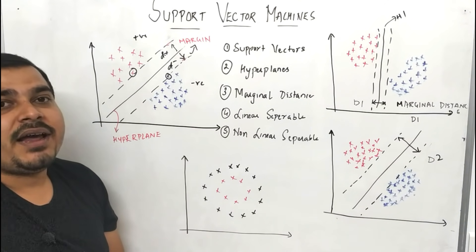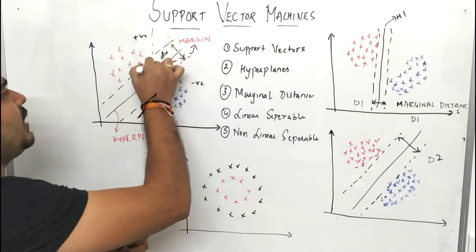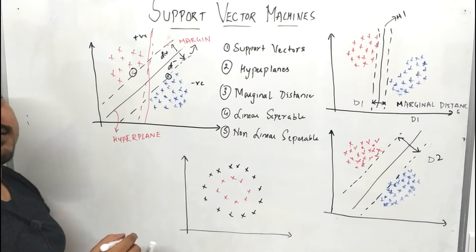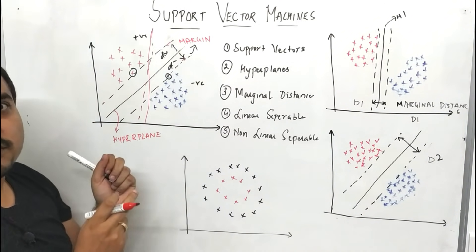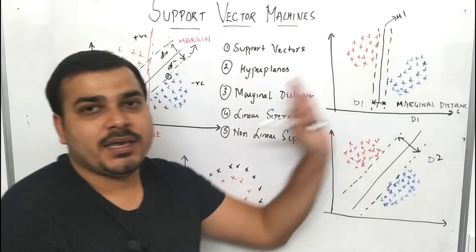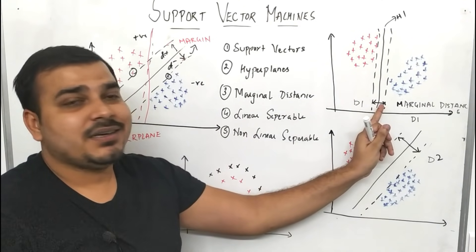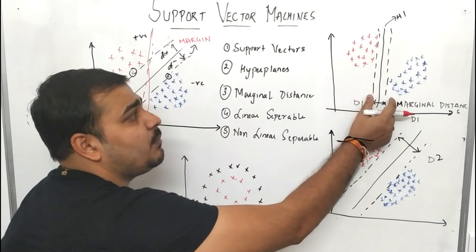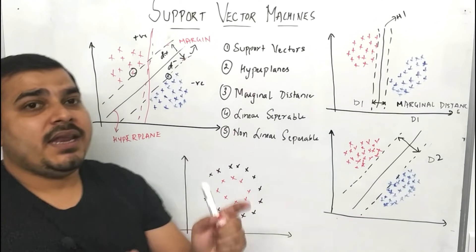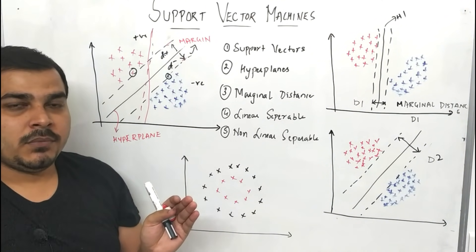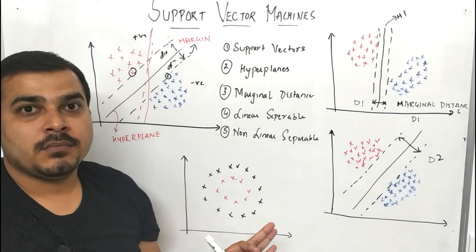Another question arises: apart from this hyperplane, we can also create multiple hyperplanes. We can create another line that also divides the points. But when I create a hyperplane, I also have to focus on the marginal distance. In this example, when I use a different hyperplane to create a separation line, the marginal plane distance is very, very small. Our main aim should be to maximize this marginal distance, and based on that we select the best hyperplane which has the maximum marginal distance.